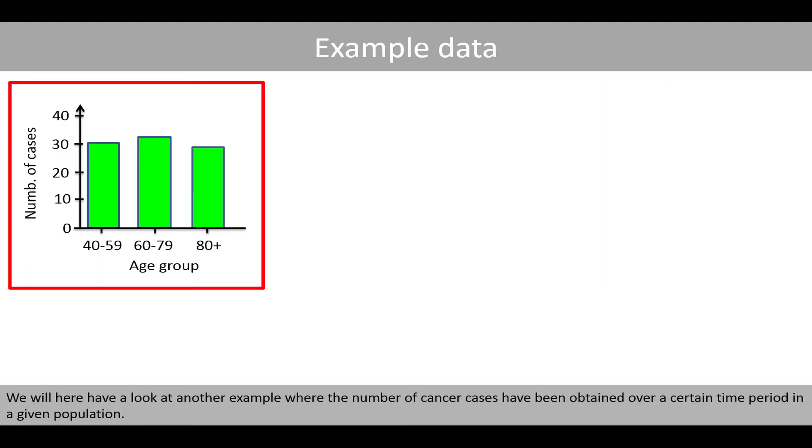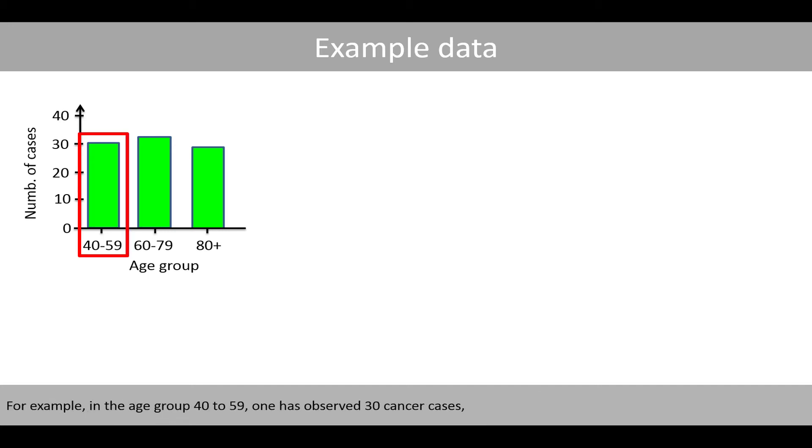We will here have a look at another example where the number of cancer cases have been obtained over a certain time period in a given population. For example, in age group 40 to 59, one has observed 30 cancer cases, whereas in age group 60 to 79, one has observed 31 cancer cases.